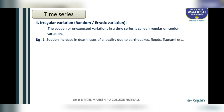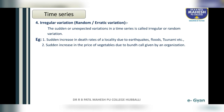For example, a sudden increase in death rates of a locality due to earthquakes, floods, or tsunami. The second example of irregular variation is a sudden increase in the price of vegetables due to a bundh call given by an organization.